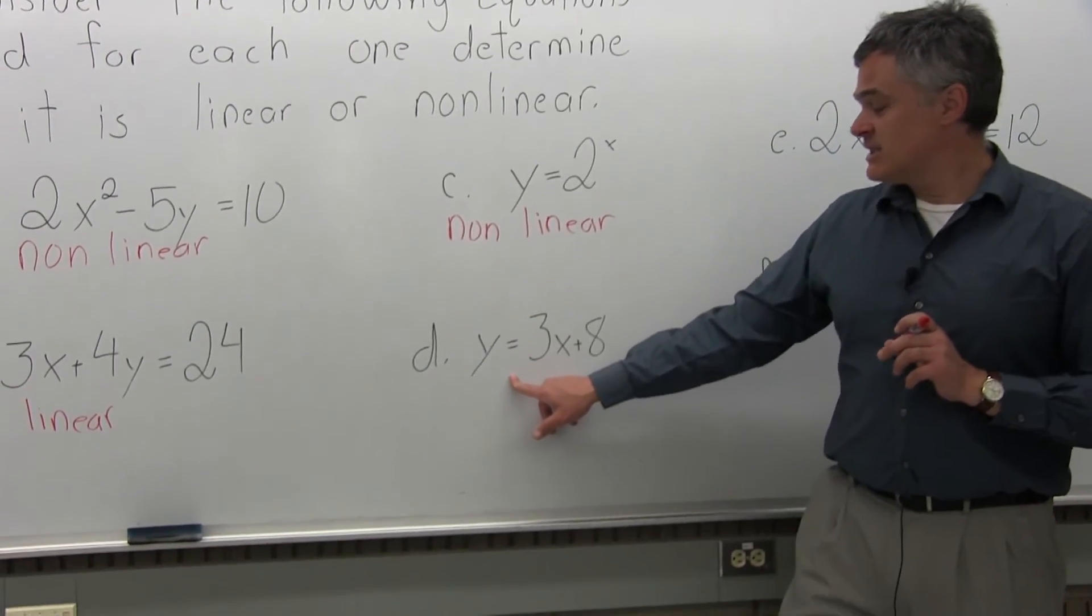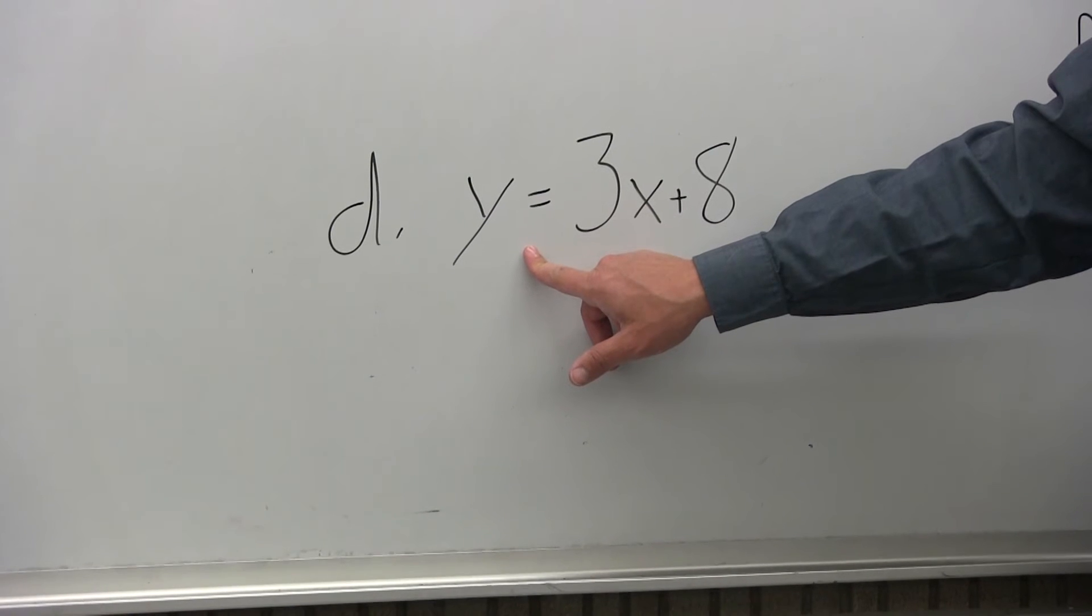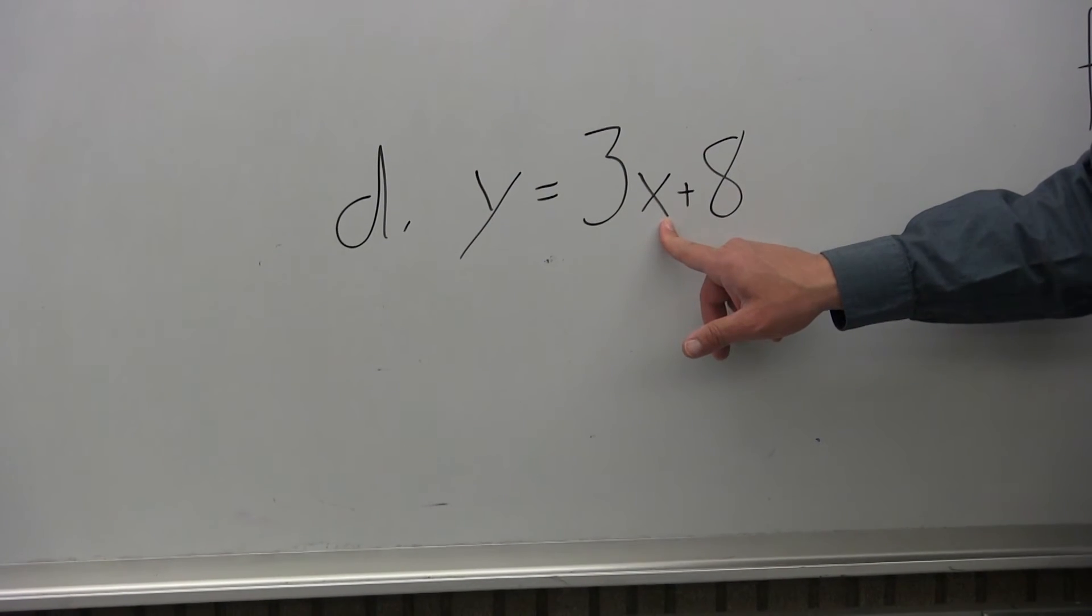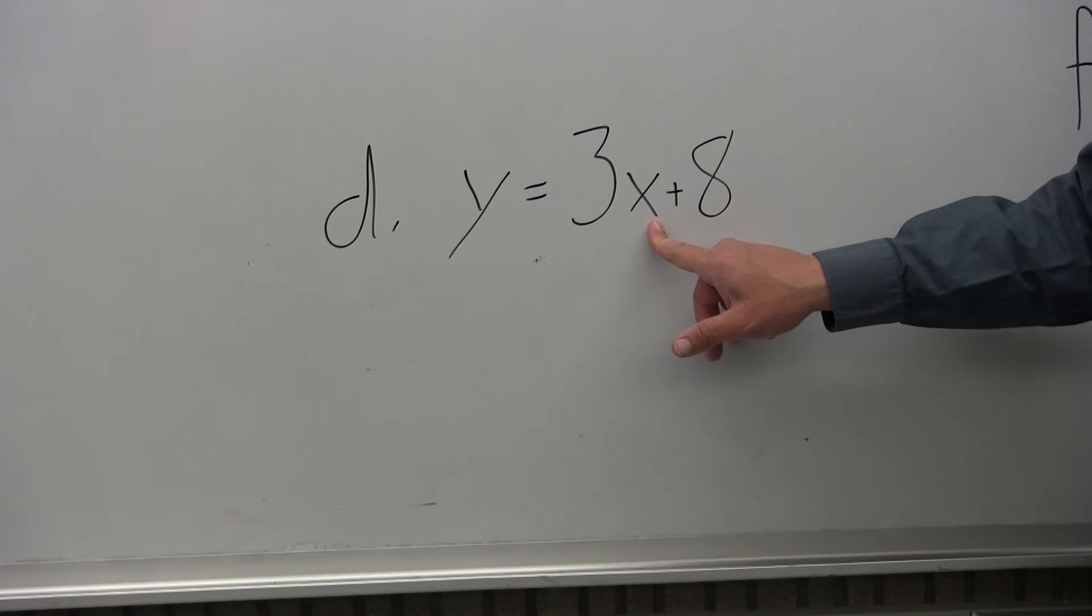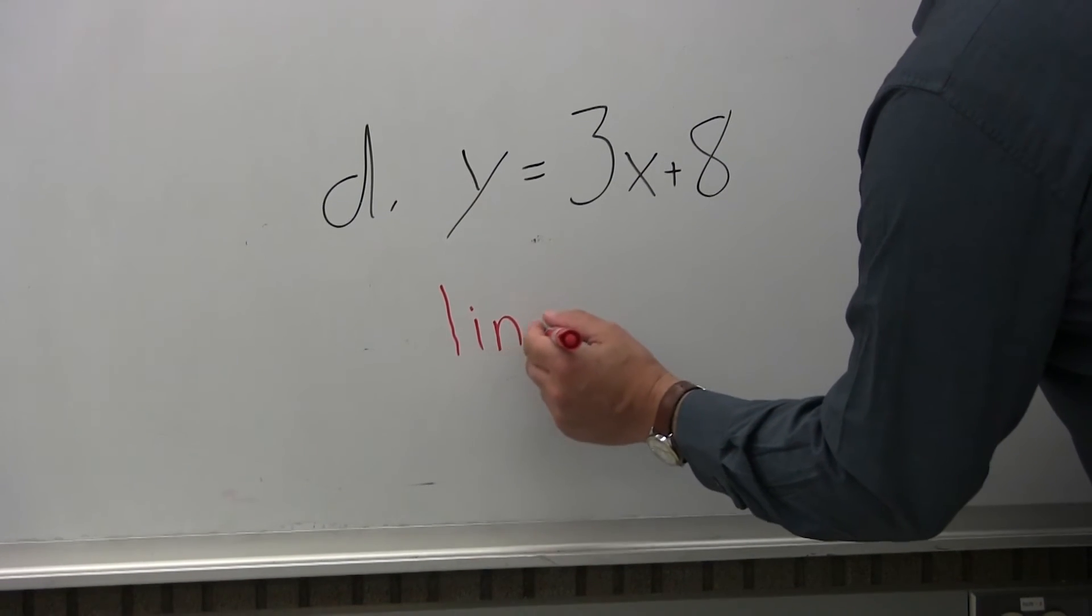Part D, same question. Is this equation linear or non-linear? y equals 3x plus 8. The two variables are only raised to the first power. So the graph would be a straight line. You would call this a linear equation.